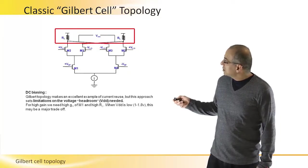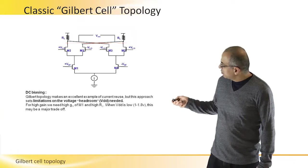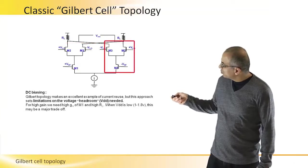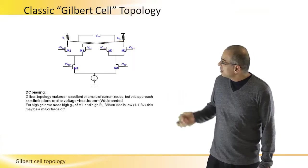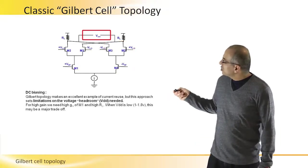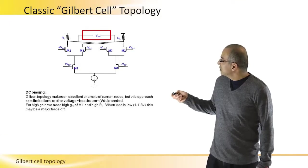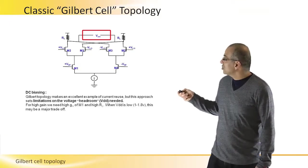But what we see is that we need to bias at least one, two, three transistors. And the output needs to be, if the output needs to be at around half VDD or maybe two-thirds of VDD.